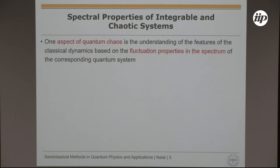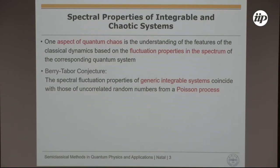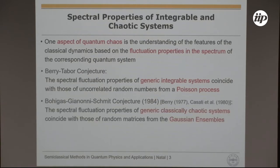One aspect of quantum chaos is understanding the features of a classical system in terms of the fluctuation properties in the eigenvalue spectrum of the corresponding quantum system. There exist predictions: one is the Berry-Tabor conjecture, which essentially proves that the spectral properties of generic integrable systems coincide with those of uncorrelated random numbers. Similar statements were already made by Berry in 1977, and there is a paper by Casati, Valz-Gris and Guarneri where they also stated a similar conjecture.